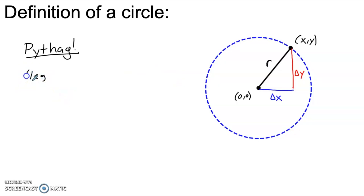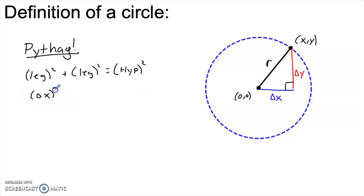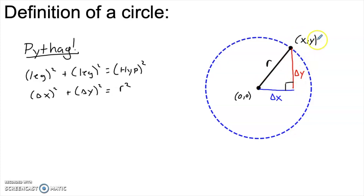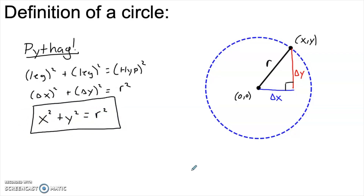Pythagoras tells us that leg squared plus the other leg squared of a right triangle is always equal to the hypotenuse squared. In this case, that's delta x squared plus delta y squared equals r squared. But if we start at (0, 0) and go to the point (x, y), then delta x is just x and delta y is just y. So this equation simplifies to x squared plus y squared equals r squared — that's the equation for any circle whose center is at the origin.